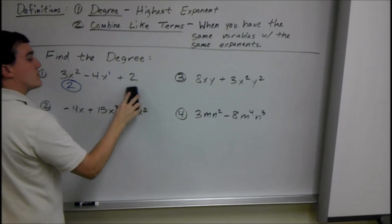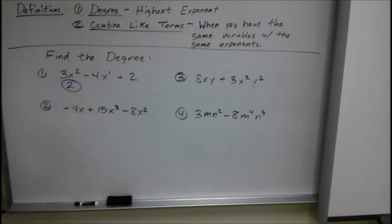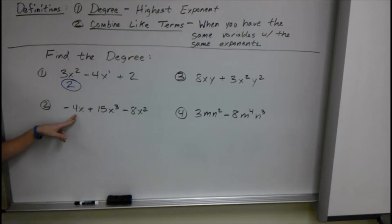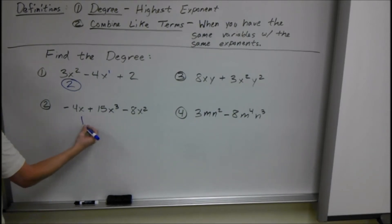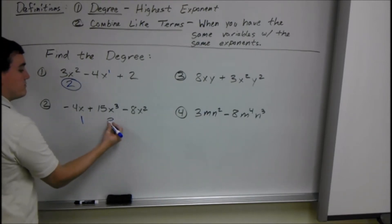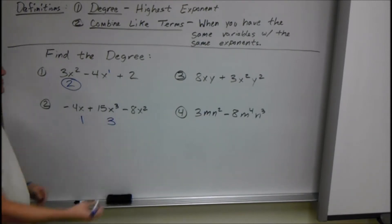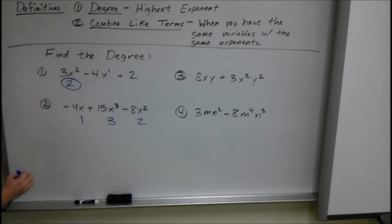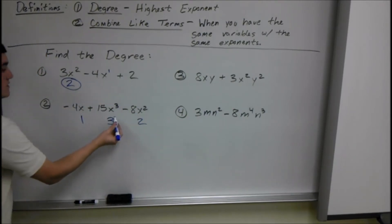We're just looking at the degree of the highest exponent, or the term with the largest degree. Same case here: the exponent here is 1, we have 15x cubed so the exponent is 3, and here the exponent is 2. So the degree of the polynomial as a whole is 3.